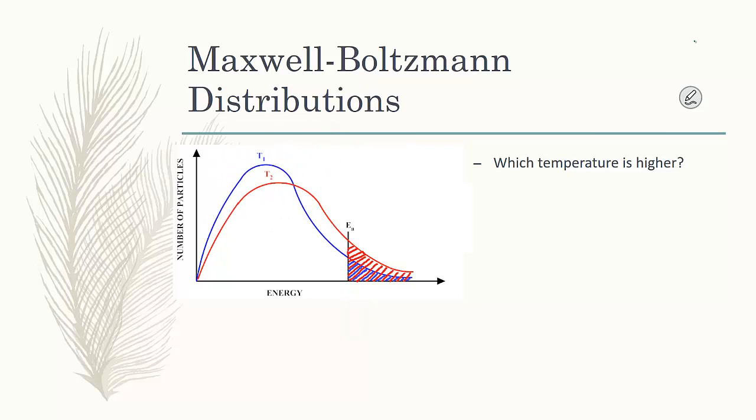Another way this question might be asked is which of these two systems, T1 or T2, will form more products? T2 will form more products because it's a greater area under the curve after the activation energy. So again on a Maxwell Boltzmann distribution, activation energy is on the X axis and will be labeled. You have to make answers based on those distributions under the curve for each one, noting where the activation energy is.